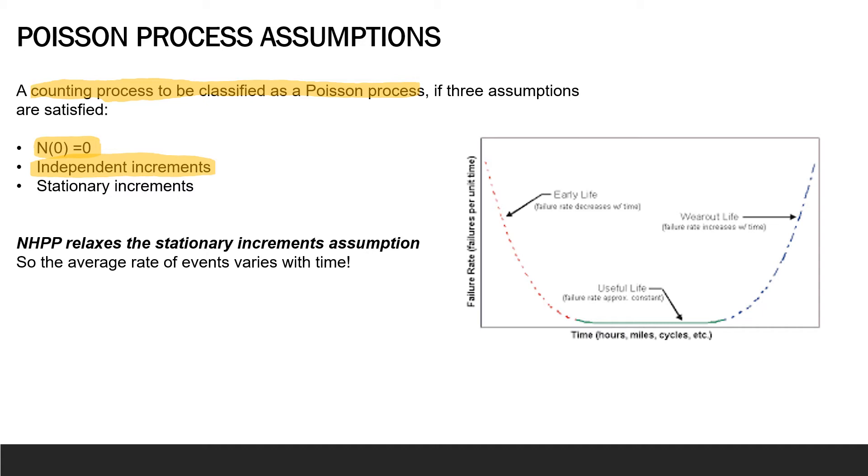So by removing this last assumption, we're saying that when we utilize the non-homogeneous Poisson process to model events, we no longer assume that the average rate of events is constant. Instead, we say that the average rate of events varies with time.